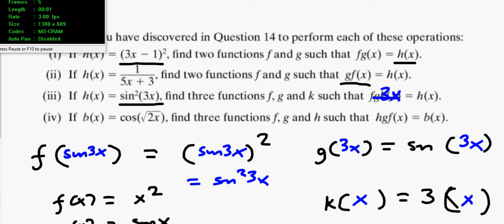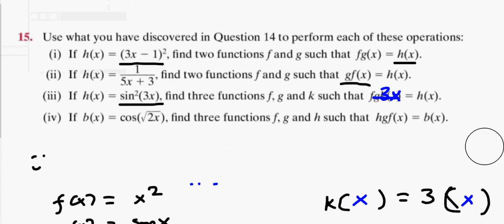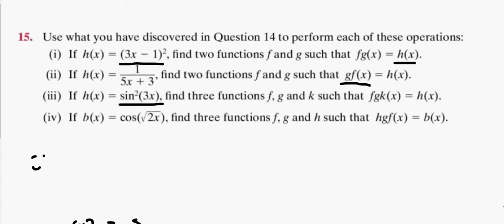Alright, so what we've got here is h(x). Now I see a square root and I see a cosine.